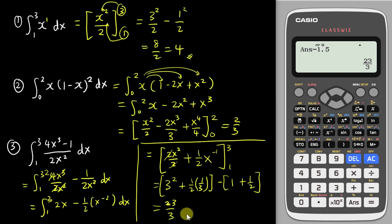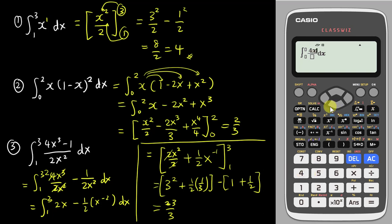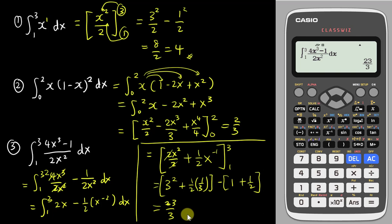To verify with the calculator, press the integration button, use the fraction template to type 4x cubed — using shift squared for cubed — minus 1 over 2x squared, then press next twice to insert limits from 1 to 3. The calculator confirms the final answer is 23 over 3.